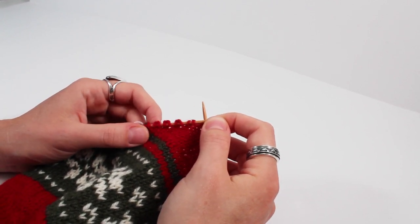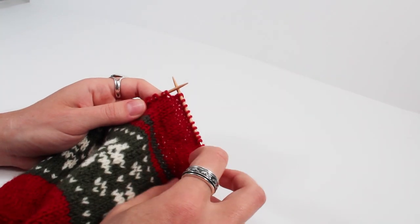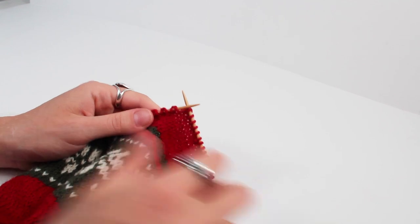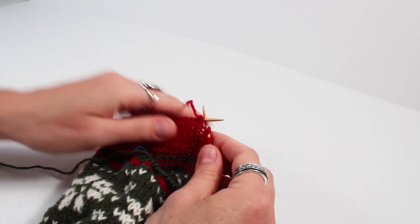So to do that the first thing you'll do is turn your work where required in the pattern, and on the purl side you'll keep the yarn in front.